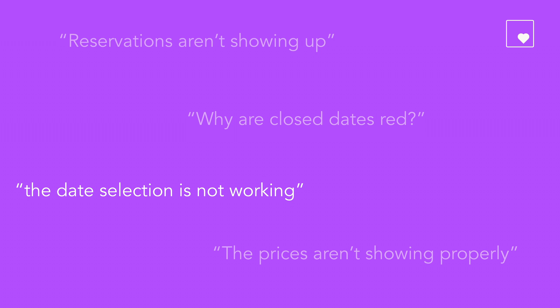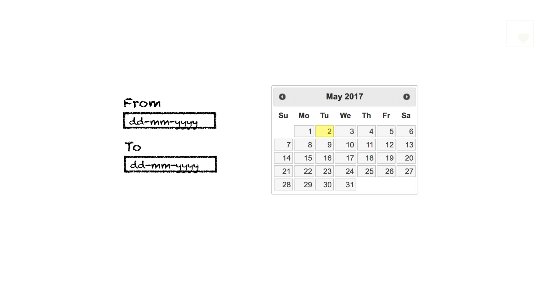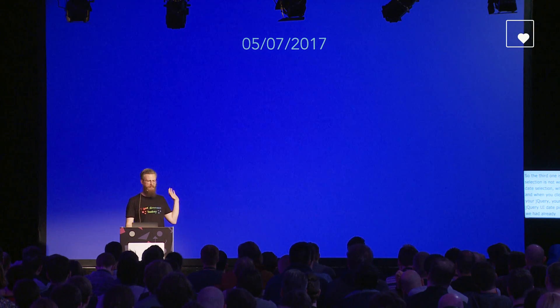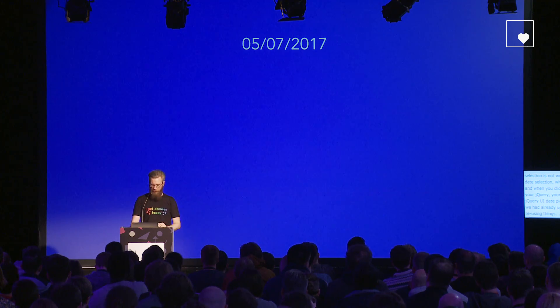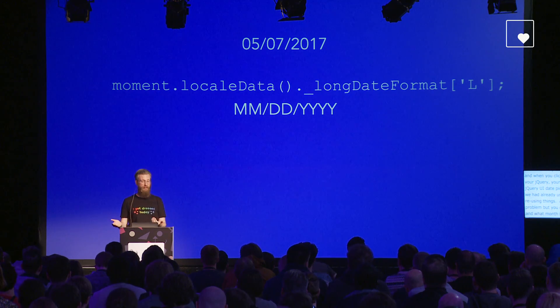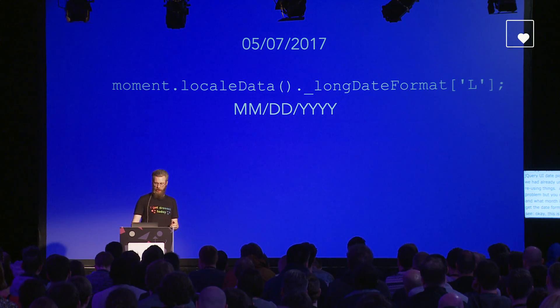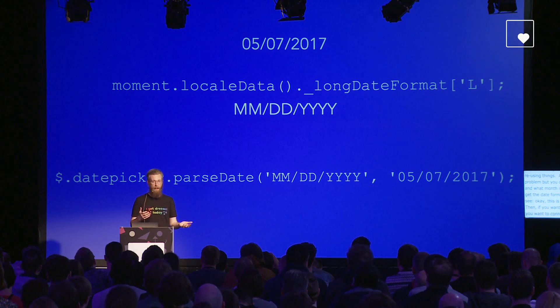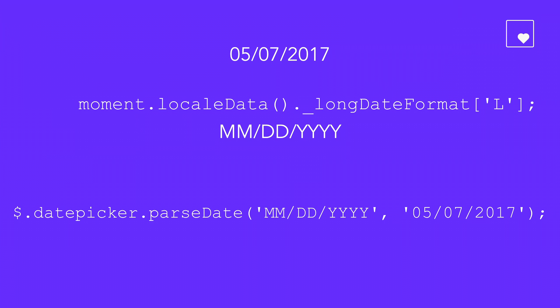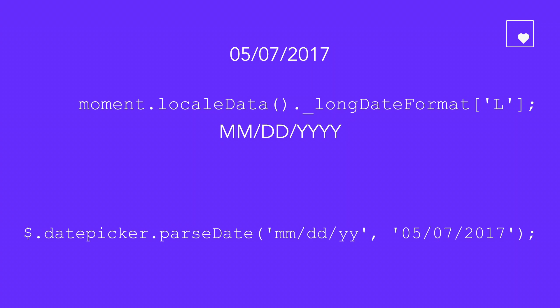The third bug was that date selection wasn't working. We used the jQuery UI date picker because we already had it. The problem was connecting it with Moment.js date formats: you'd get the date format from Moment.js showing month, day, year, then pass it to jQuery UI's parseDate - but it gives an error, because jQuery UI uses lowercase letters and the year changes to only two Y's instead of four.